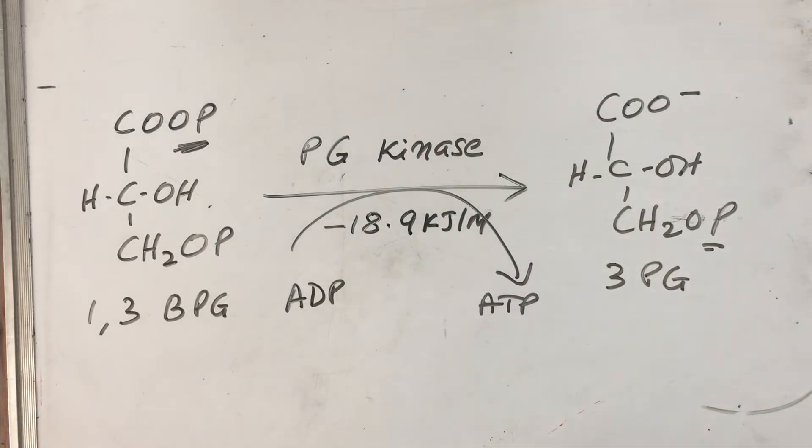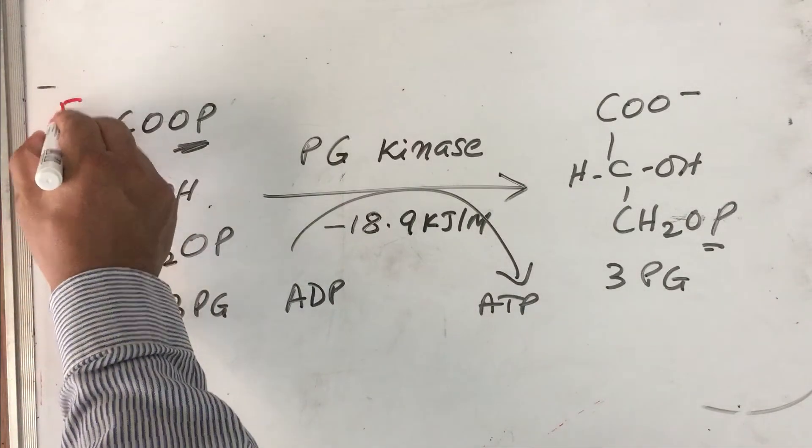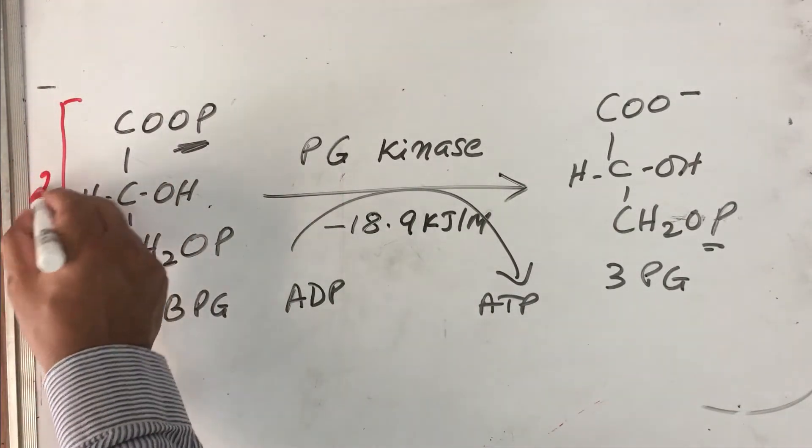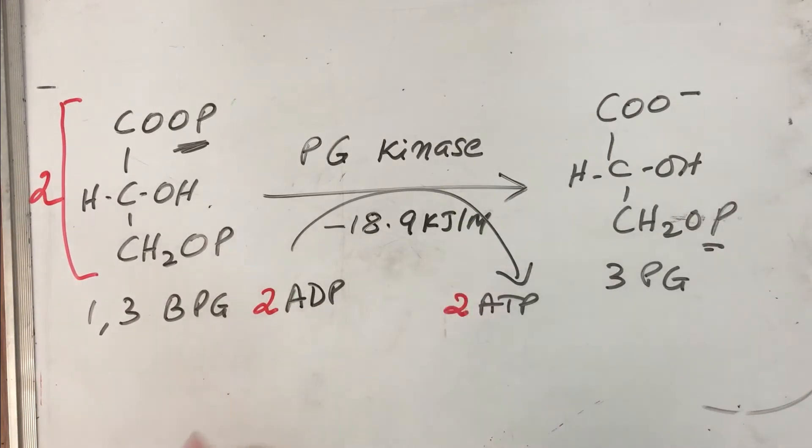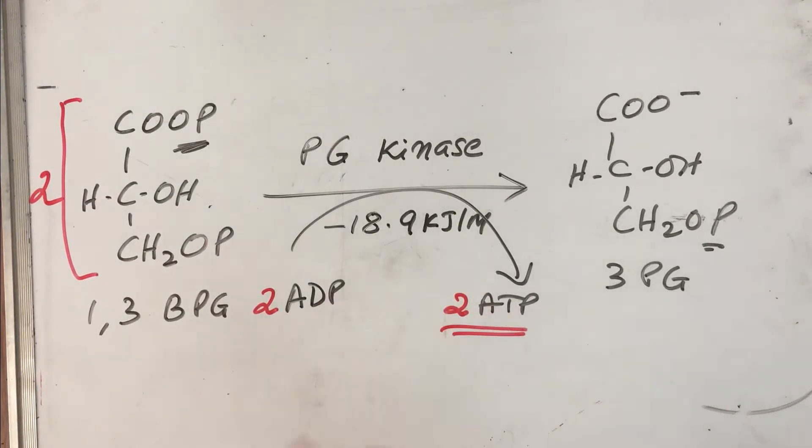The net resultant product is 3-phosphoglycerate. Remember we began with a 6-carbon problem, so two such molecules will be participating. Therefore, 2 ADP and 2 ATP molecules will be the net result. We had invested initially 2 ATP molecules to prime the molecule, so now we have balanced it by yielding 2 ATP molecules in this step.